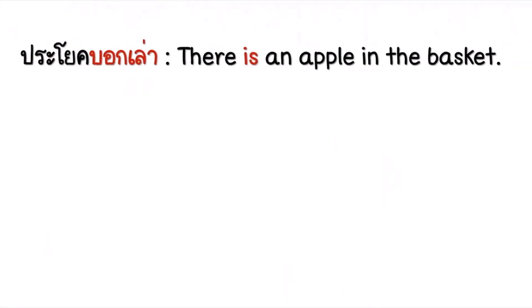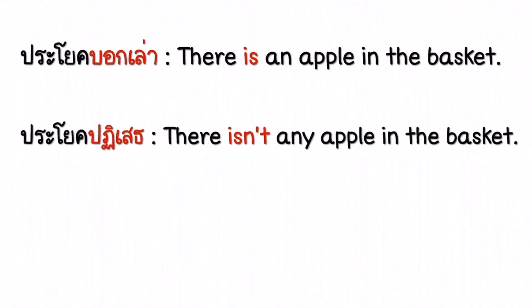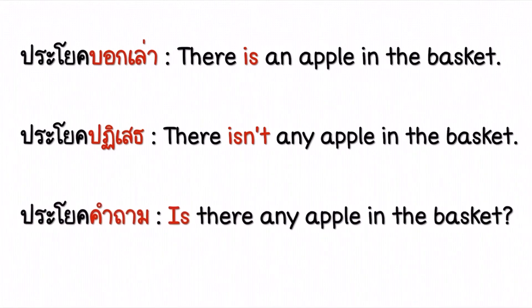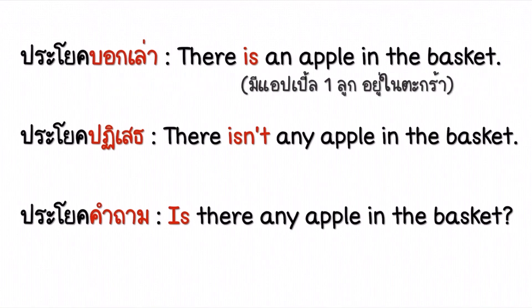เรามาทบทวนกันนะคะ ระหว่างประโยคบอกเล่า ประโยคปฏิเสธ และประโยคคำถาม ว่าต่างกันอย่างไรค่ะ ประโยคบอกเล่า: There is an apple in the basket มี apple หนึ่งผลอยู่ในตะกร้า ถ้าเป็นประโยคปฏิเสธก็แค่เติม not เข้าไปข้างหลัง เขียนในรูปย่อว่า There isn't any apple in the basket เราสามารถเติม any ลงไปได้เพราะว่าไม่มี apple อยู่เลย และถ้าเป็นประโยคคำถาม ก็ย้าย Is มาสลับกับ There และเติม Question Mark ท้ายประโยคค่ะ